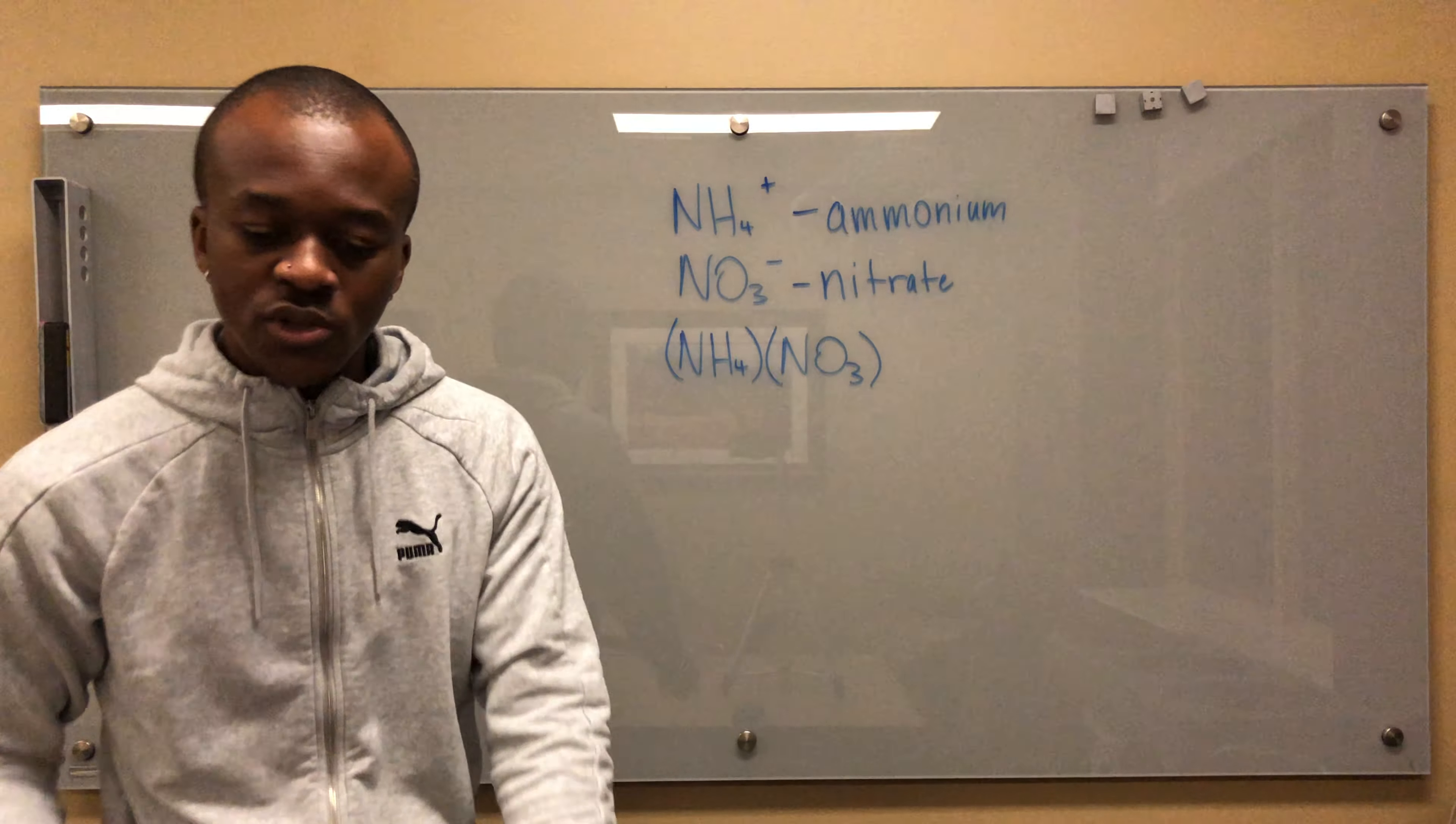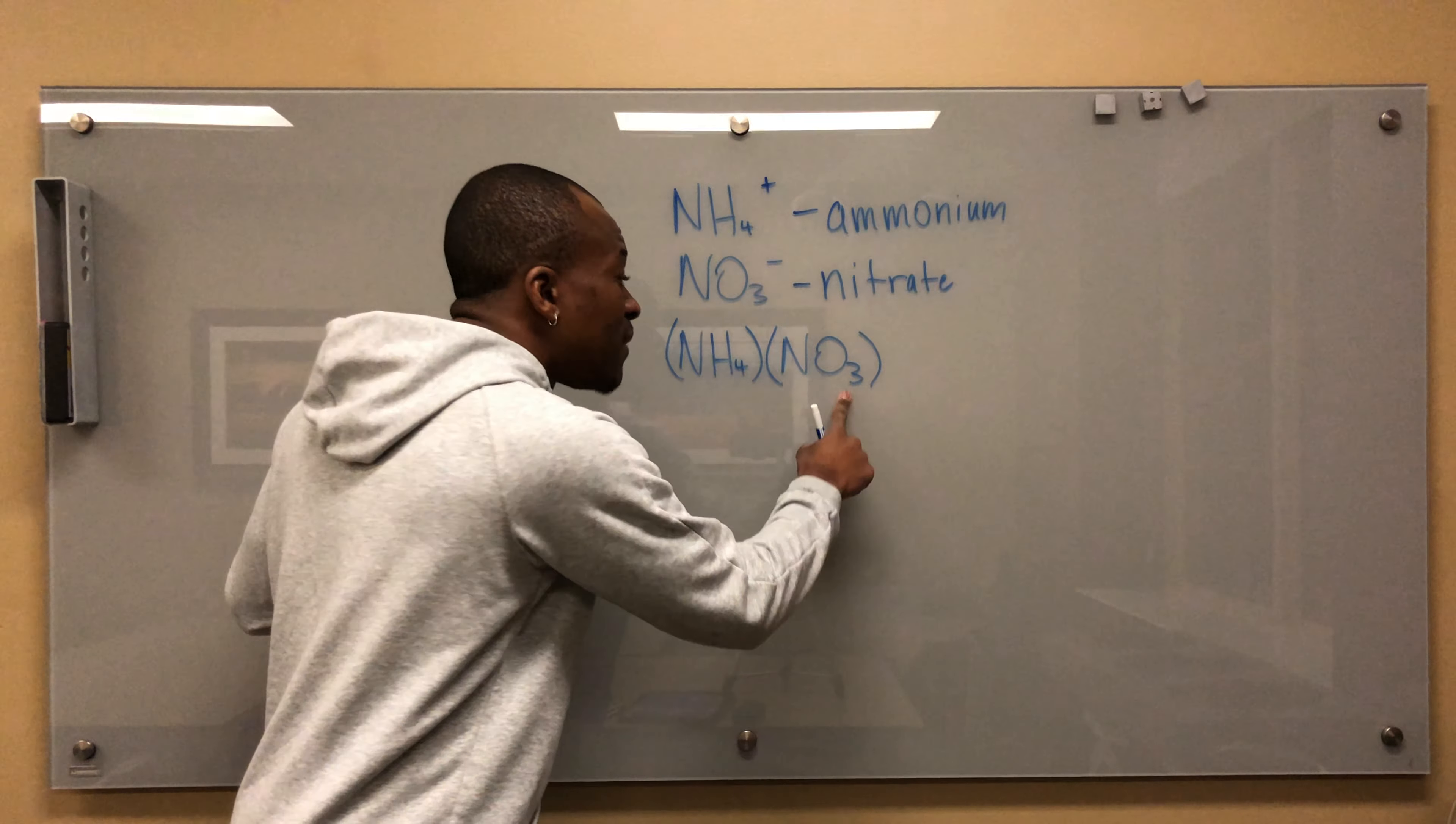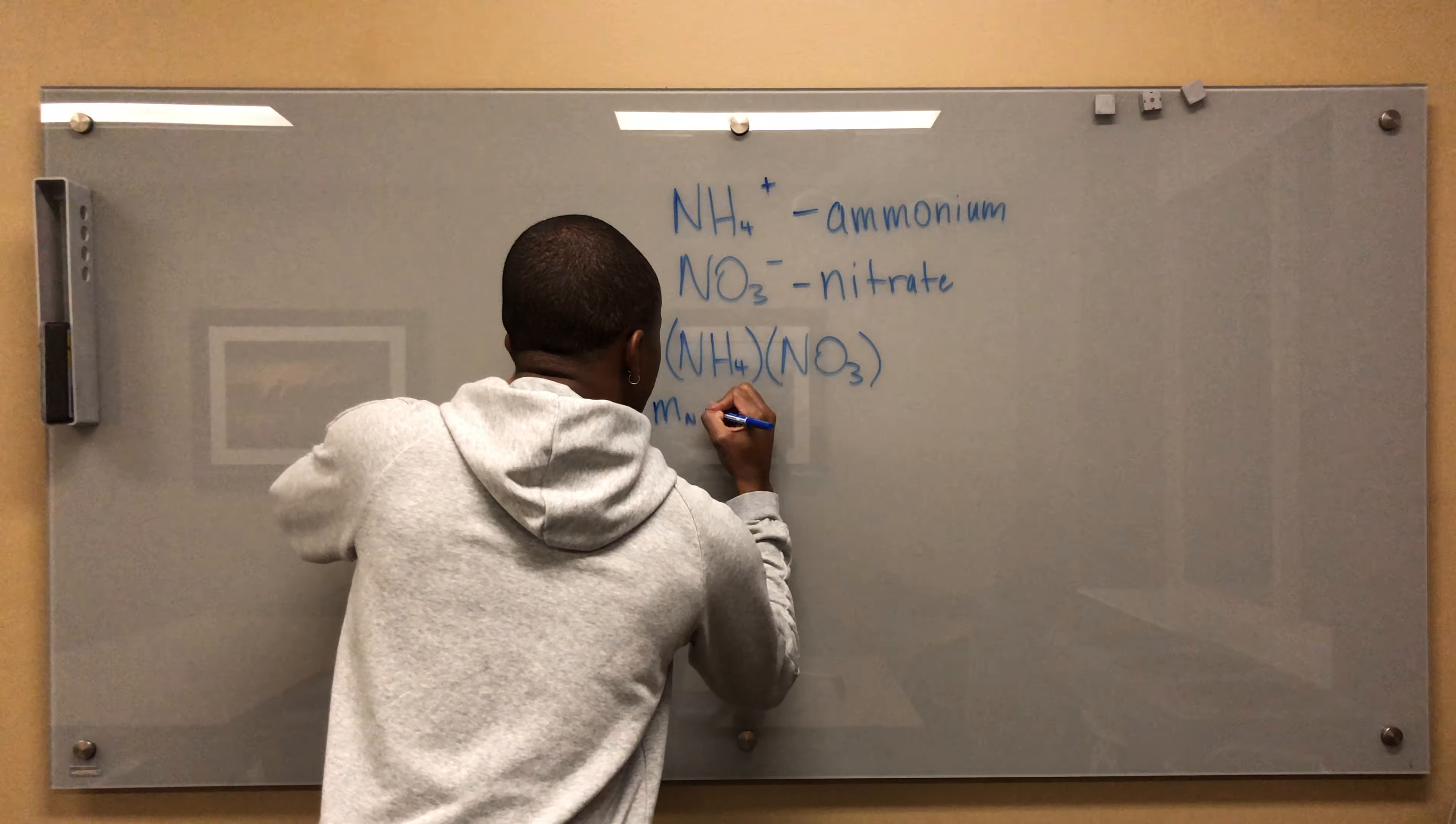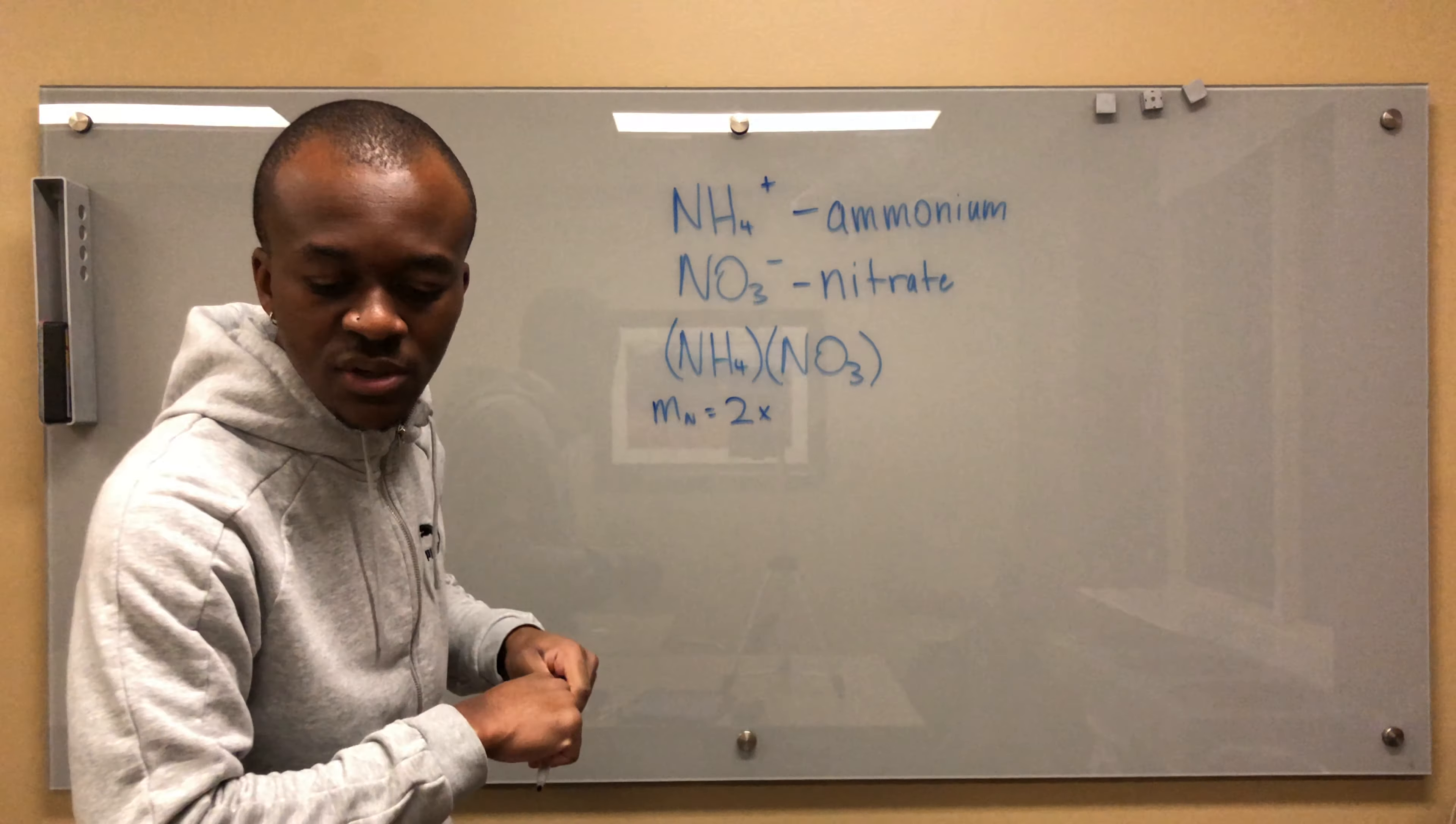Now I want us to look at what we have. I'm going to find the mass of each element: the mass of N, the mass of H, and the mass of O. Notice I didn't say the mass of N again because I'm going to combine the two nitrogens into the total mass of N. Mass of N is going to be two times the molecular mass of nitrogen, which is 14.0067.